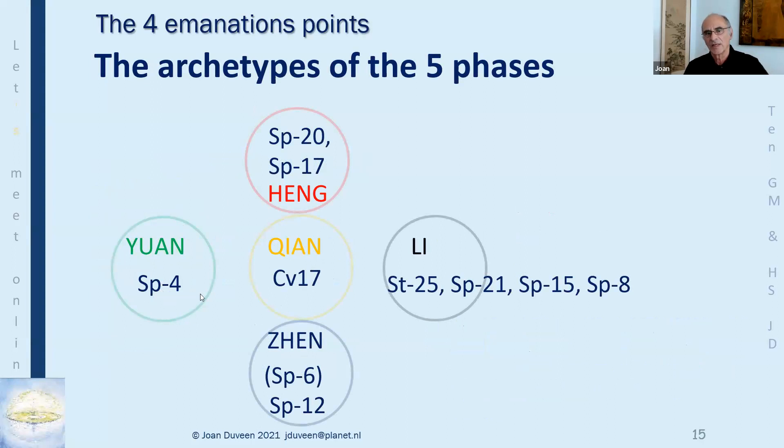How does that relate to the five antique points? There are many questions about them. On the yin channels, the antique points start with wood — that quality of emanation Yuan. On the yang, they start with metal, which is related to emanation Li. Yet the book says that all Jing Well points have the quality of Yuan. Can you explain that?